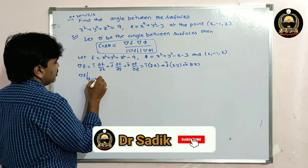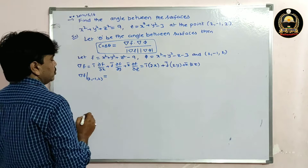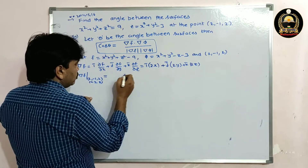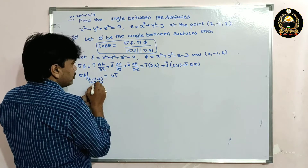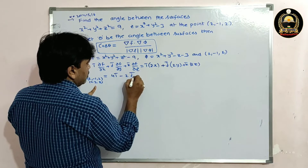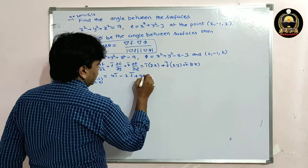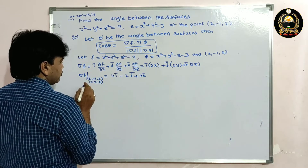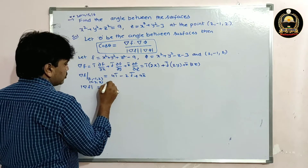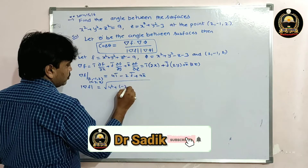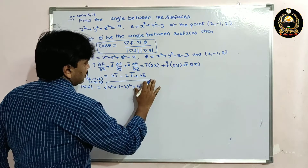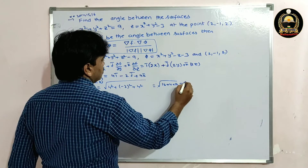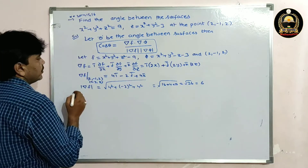Evaluating ∇f at the point (2, -1, 2): x = 2, y = -1, z = 2. So ∇f = 4i̅ - 2j̅ + 4k̅. The modulus |∇f| = √(4² + (-2)² + 4²) = √(16 + 4 + 16) = √36 = 6.